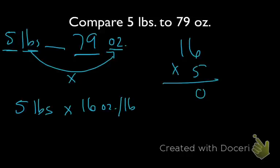5 times 6 is 30, put 0 down below, carry the 3. 5 times 1 is 5 plus 3 is 8. We're left with 80. So how many ounces equal 5 pounds? There are 80 ounces.